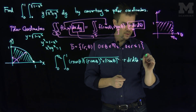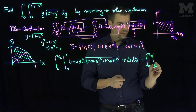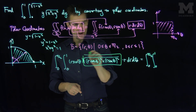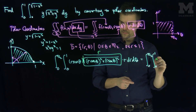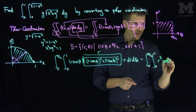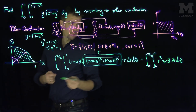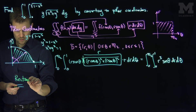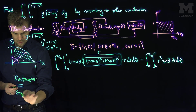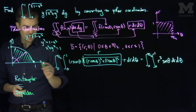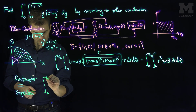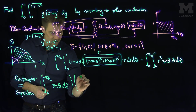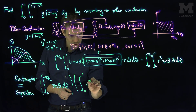We can notice that this is the integral from 0 to pi over 2, the integral from 0 to 1. This square root over here simplifies to r, so I have r cubed sine theta, then dr and d theta. Here I can separate because I have a function of r times a function of theta. So by separation, this is the integral from 0 to pi over 2 of sine theta d theta, times the integral from 0 to 1 of r cubed dr.